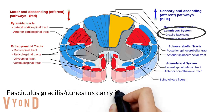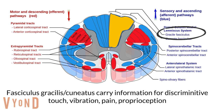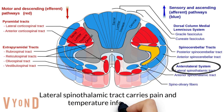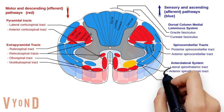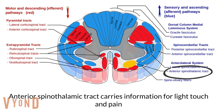Here are a few of the tracts. The fasciculus gracilis and cuneatus carry information for discriminative touch, vibration, pain, and proprioception. The lateral spinal thalamic tract carries pain and temperature information. The anterior spinal thalamic tract carries information for light touch and pain.